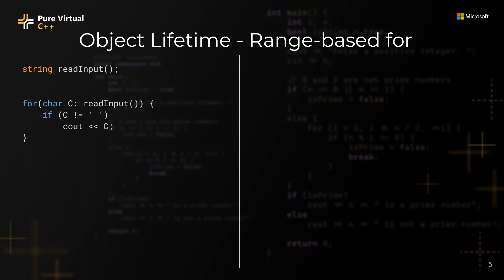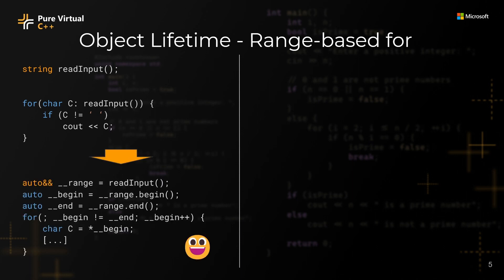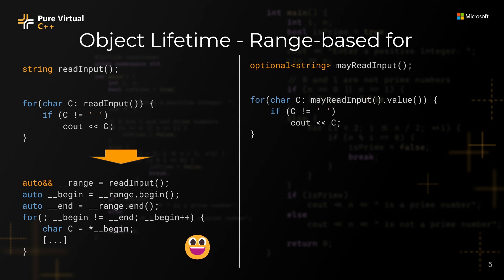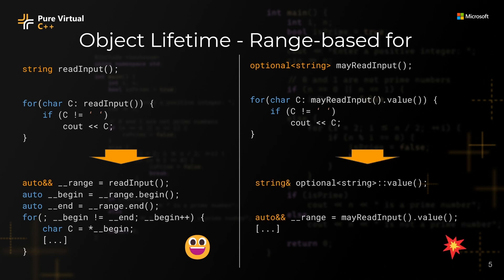Let's look at what will happen to the return value of readInput. The range-based for loop will be expanded to a sequence of statements like this. The temporary returned by readInput will be bound to a reference, and that reference will extend the lifetime of the temporary, so there is no dangling — this code snippet is safe. On the other hand, let's imagine readInput might fail and it returns an optional. However, we do know that this particular call will never fail, so we use the value method of optional to extract the string. If we look at the expanded version of this range-based for loop, we will see that the reference is bound to the return value of the value method, and that returns a reference. Since we initialize this reference with another reference, there is no lifetime extension happening in the background. The result of readInput will be cleaned up before we enter the loop, and the reference returned by value will then dangle.